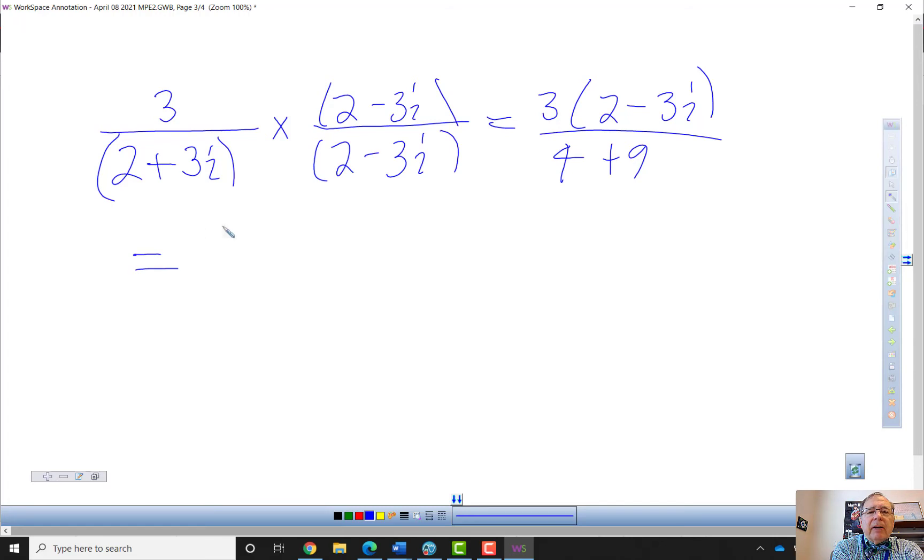So we're not going to be able to divide out anything. My denominator is going to be 13. And this is going to be six minus nine i.